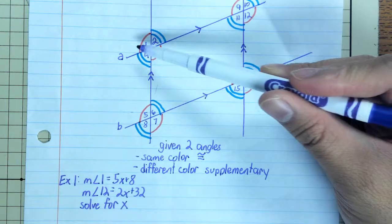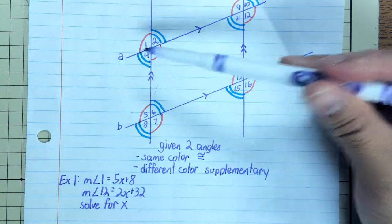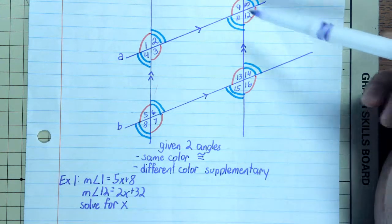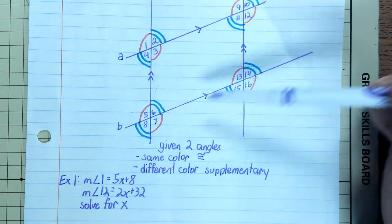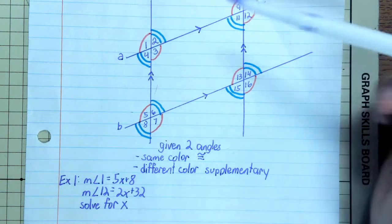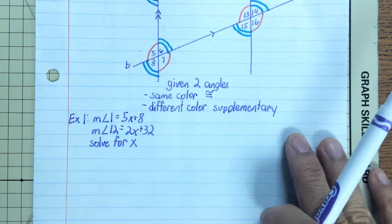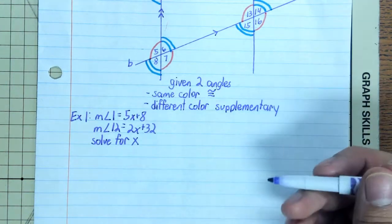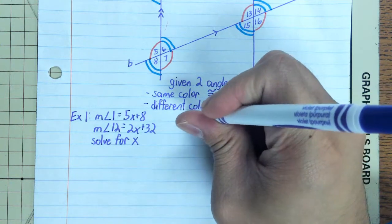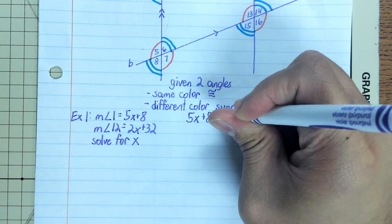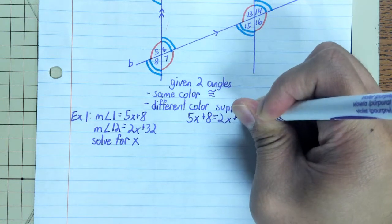Let's take a look. Angle 1 is up here and angle 12 is over here. Notice that 1 and 12 are alternate exterior angles. And also, if we're just looking at our color codes, they're both red, and down here says if they're the same color, they're congruent. Congruent means we can set them equal to each other. So my equation would be 5x plus 8 equals 2x plus 32.